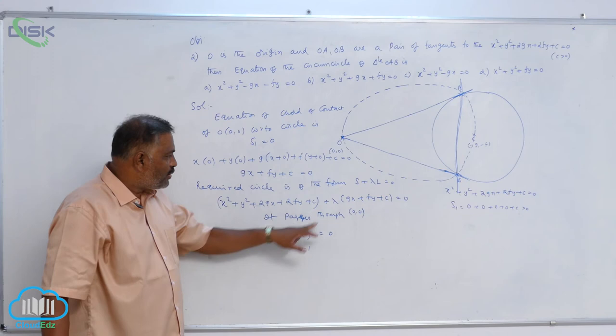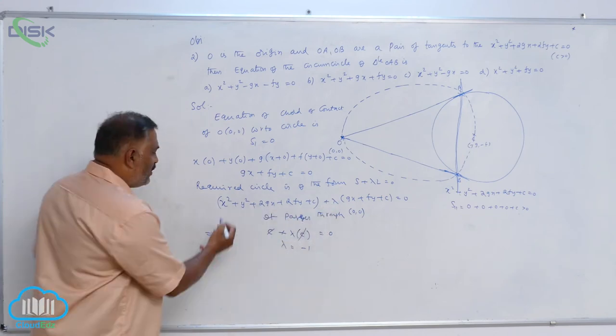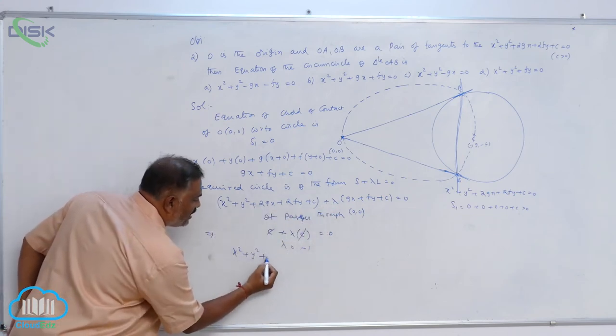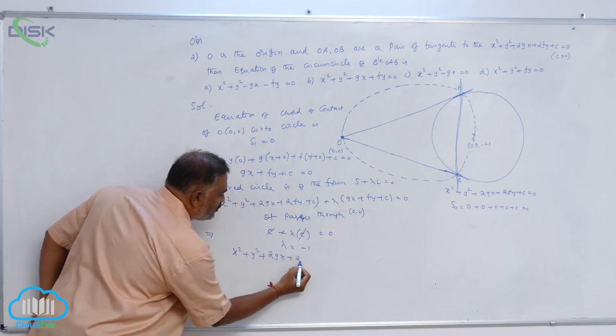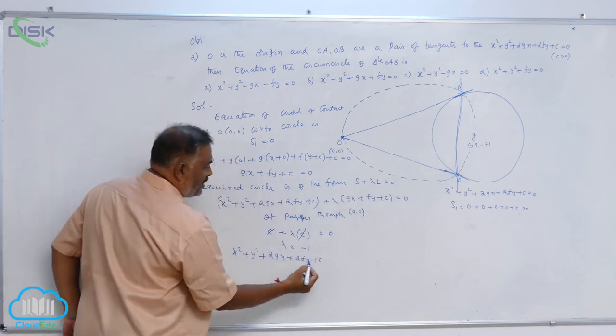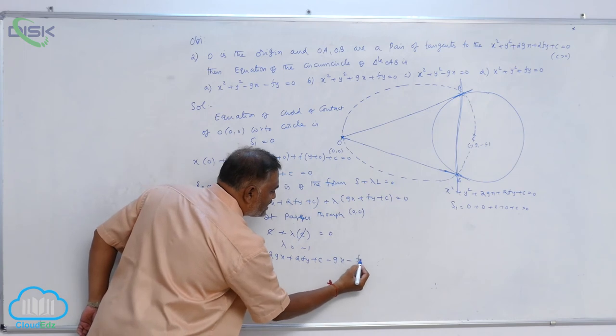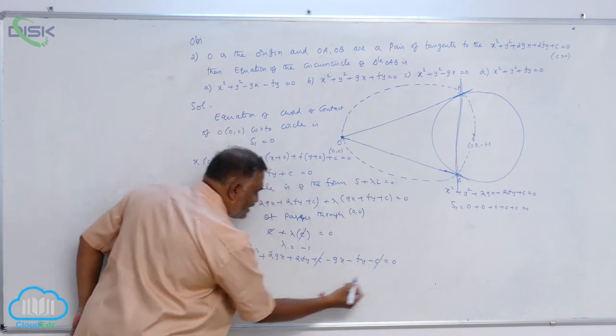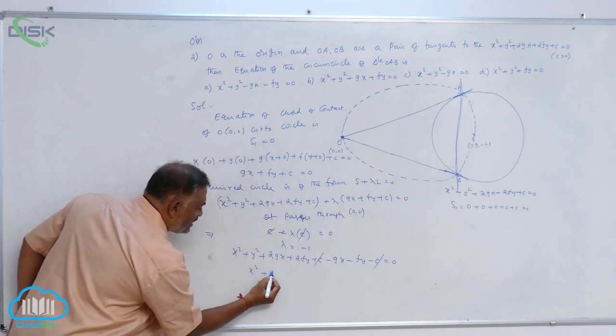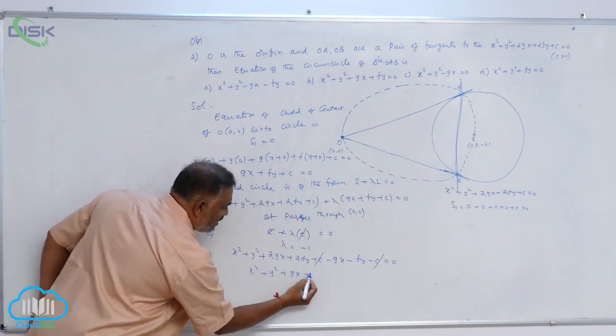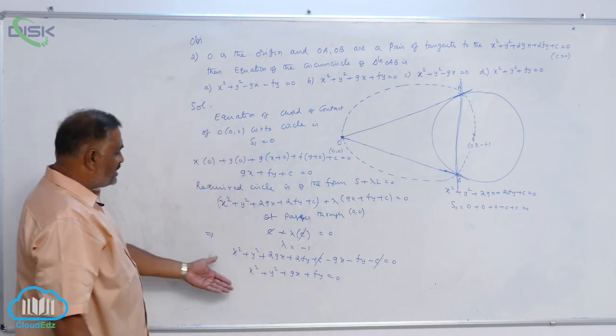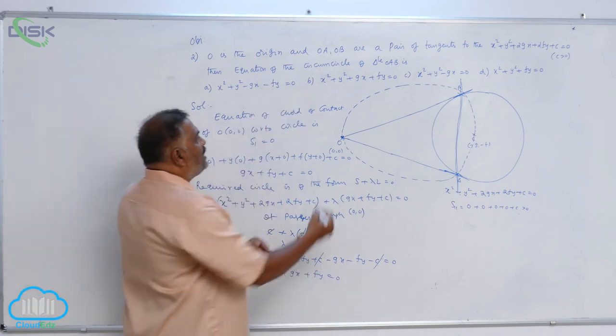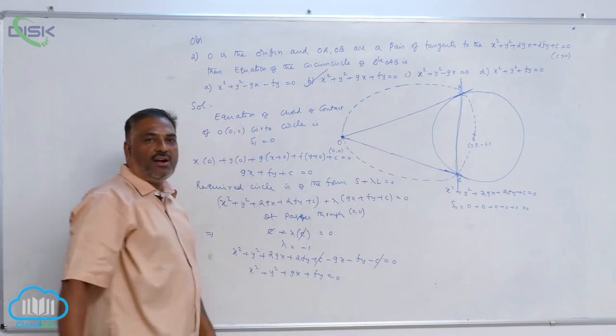Substituting lambda equal to minus 1 in this equation, you will get X square plus Y square plus 2GX plus 2Fy plus C minus GX minus Fy minus C is equal to 0. C gets cancelled. X square plus Y plus GX plus Fy is equal to 0. Now, you can see very clearly option 2 is highly satisfying our answer.